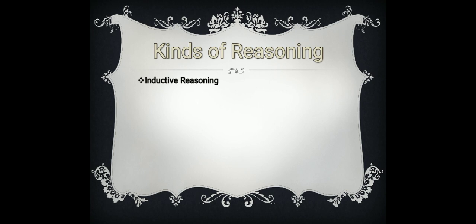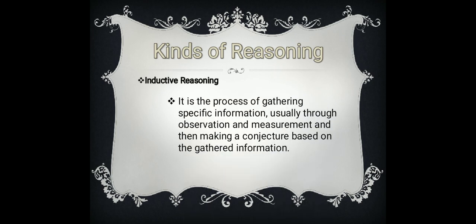The third kind of reasoning is inductive reasoning. Inductive reasoning is the process of gathering specific information, usually through observation and measurement, and then making a conjecture based on that gathered information. It is a kind of reasoning in which you start from specific information, collect specific instances, and then generalize them into a conclusion. You start from specific cases going to a generalization or conclusion — that is inductive reasoning.